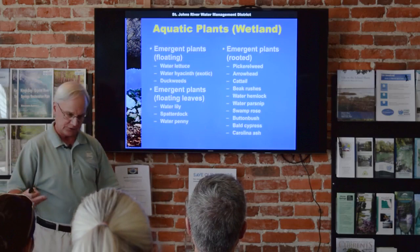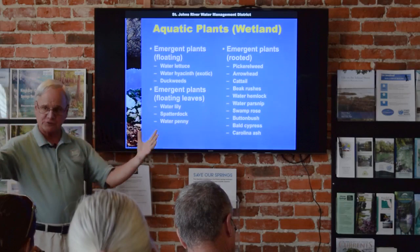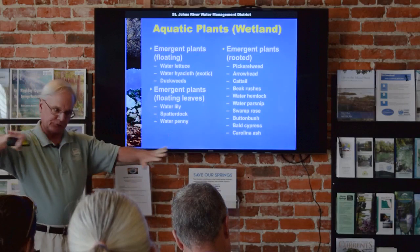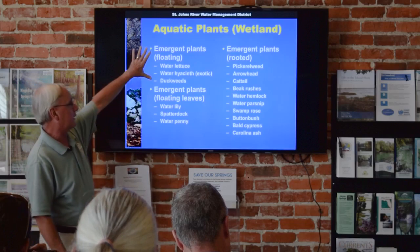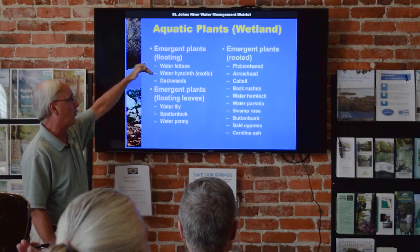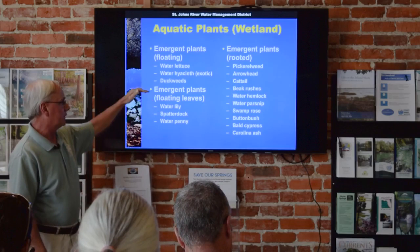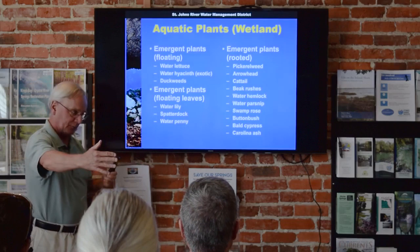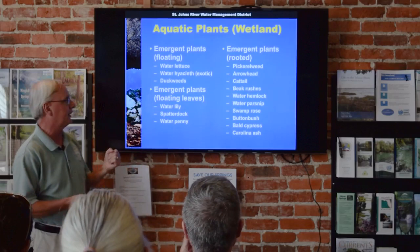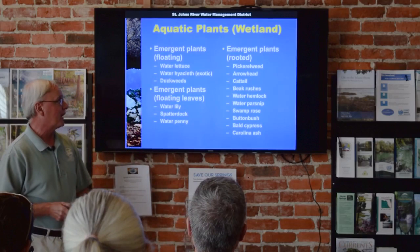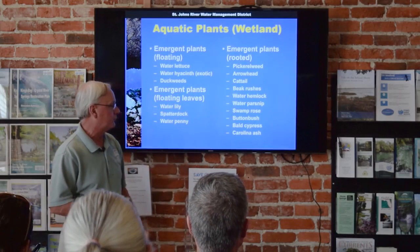Those are the submerged plants living totally underwater. We also get various emergent plants growing along the margins of the spring pool or along the spring run, and in the floodplains if the spring has one that floods regularly. Three major growth forms: true floating plants like water hyacinth (an exotic), water lettuce, and duckweeds; plants rooted in the bottom that send up a petiole with a floating leaf — water lily, spatterdock, your lily pad kinds of things; and true emergent plants like pickerel weed, cattail, swamp rose, button bush, bald cypress, and Carolina ash.